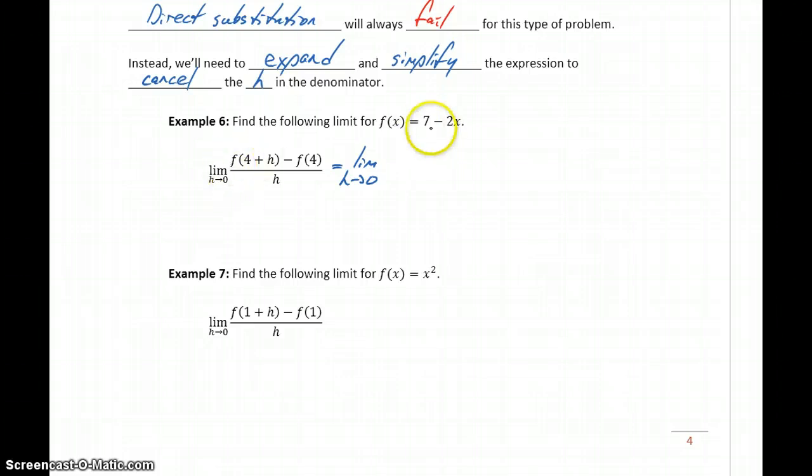So our function f is 7 minus 2x. And then in place of x, we're going to substitute in whatever is inside those parentheses. So in this case, 4 plus h. And then we'll subtract that function evaluated at 4. So this will be 7 minus 2 times 4, all over h.